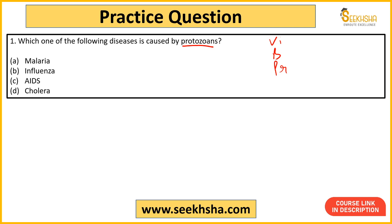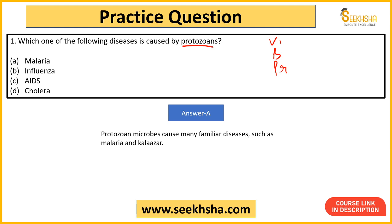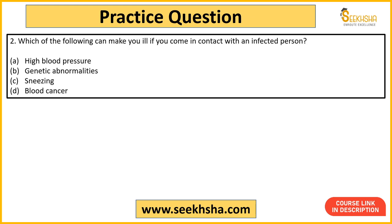Yeh e-course bahut cheap hai aur PDF files bhi hain. Options mein AIDS, cholera, malaria, kala-azar diye hain. Correct answer option A - malaria hai. Malaria ek protozoan infection hai, aur kala-azar bhi protozoan microbial infection ke andar aata hai. Toh malaria aur kala-azar dono protozoan infections hain - yaad rakhna hai.